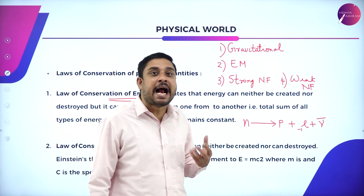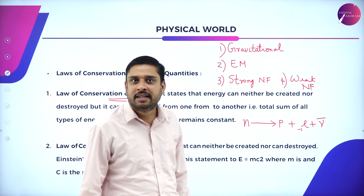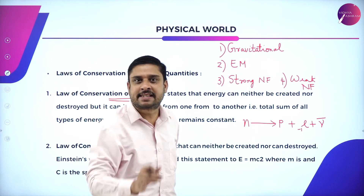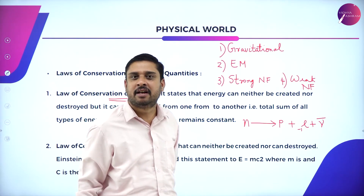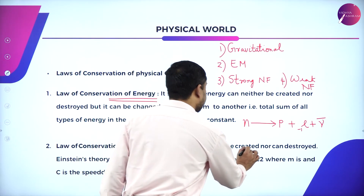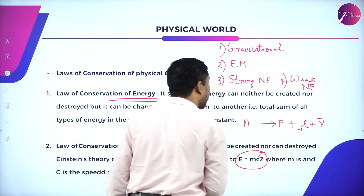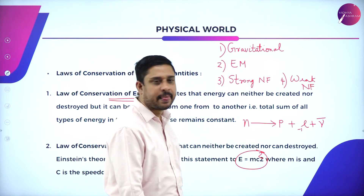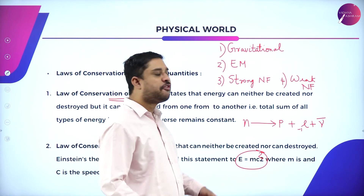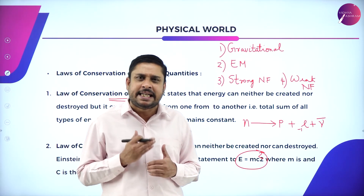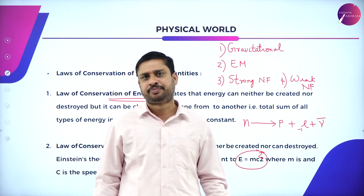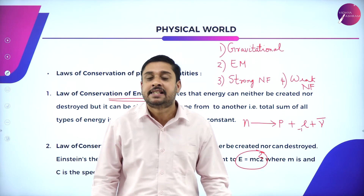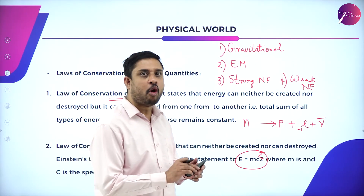It was previously taught that mass and energy are two different terms and cannot be equated or expressed in one form. But Einstein, through his theory of relativity, gave the mass-energy relation E = mc², where energy is expressed in terms of mass and mass in terms of energy. In the study of fundamentals of physics, conservation of mass plays a very important role.